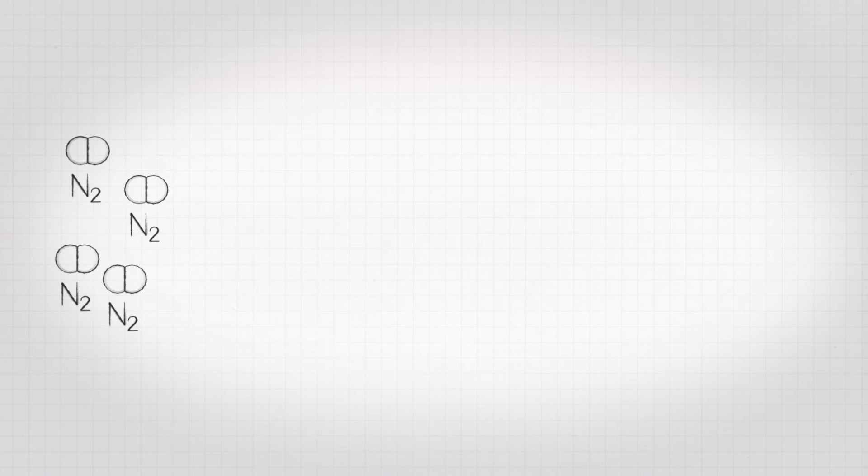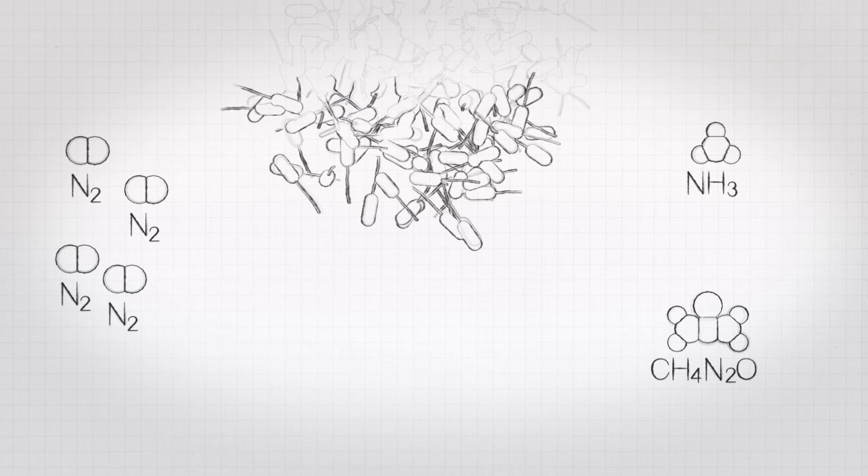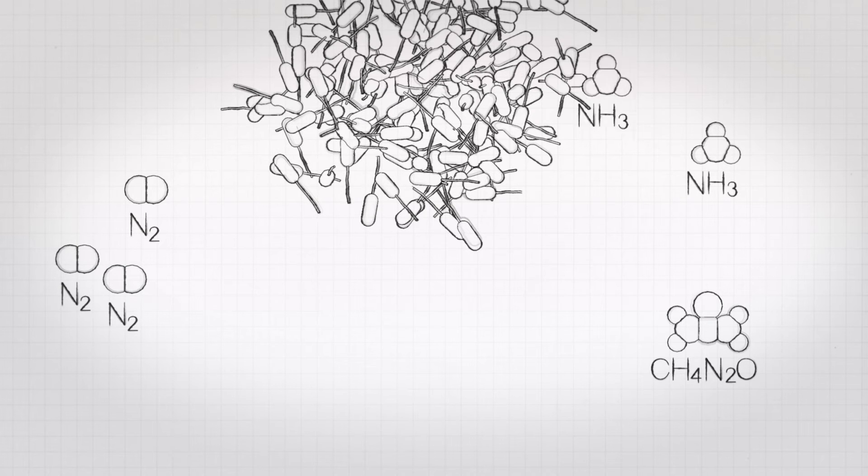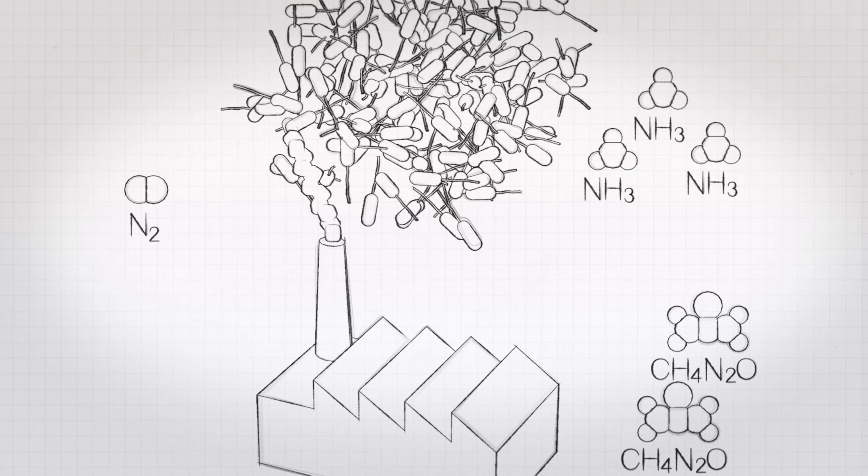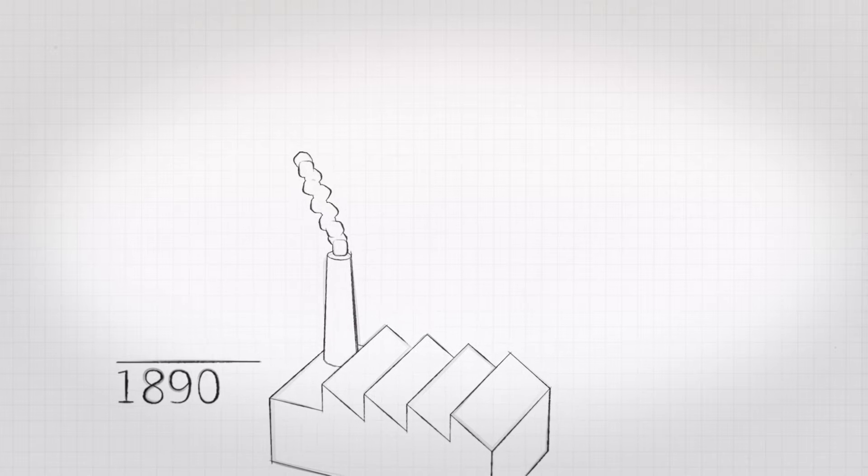But before it is used by them, it has to be converted into reactive forms such as ammonia or urea. This can be done by specialized microorganisms or in large chemical factories. Since 1890, the yearly anthropogenic production of reactive nitrogen has increased ninefold.